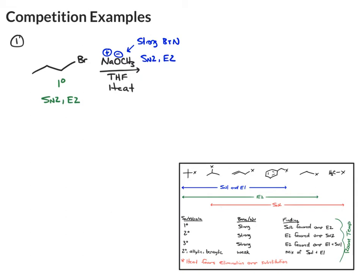Third, the solvent, which, as I mentioned before, solvent shouldn't be a deciding factor, but it is useful. The solvent here is THF. It's polar aprotic, which polar aprotics favor SN2 and E2. And then finally, we're given heat, and the heat is going to favor elimination, E1 and E2.